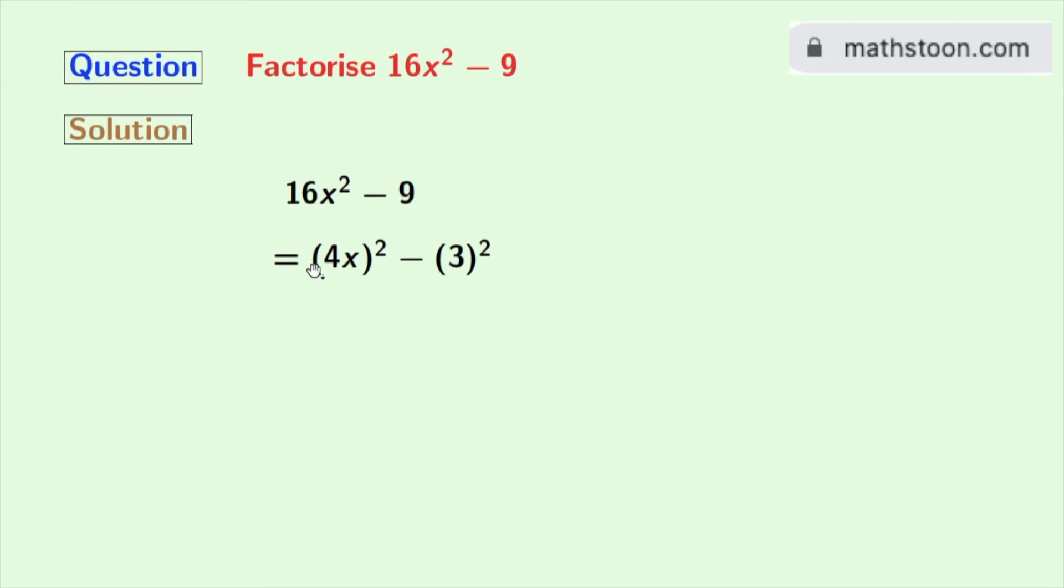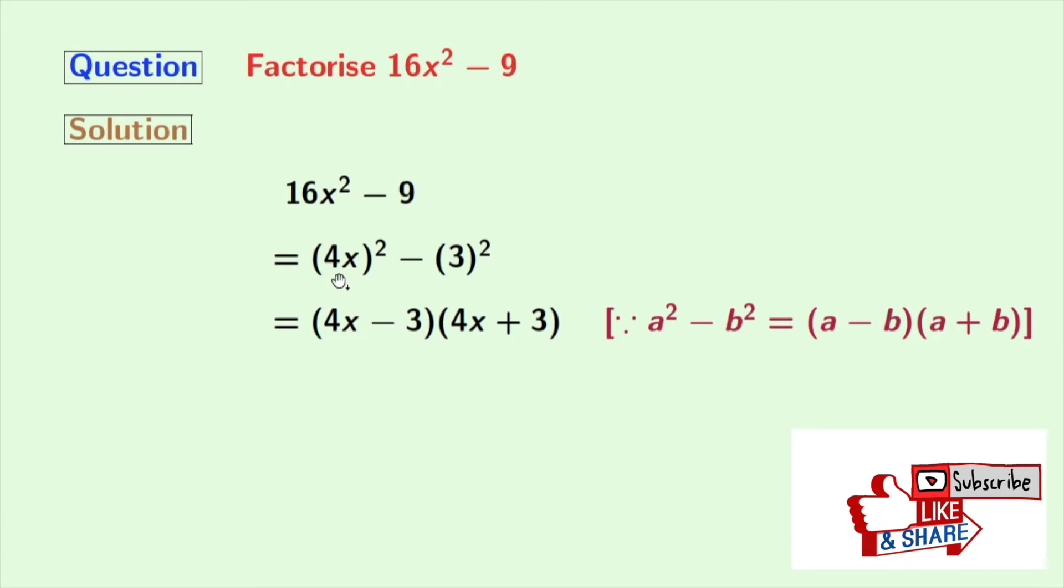Where a is 4x and b is 3, so we can easily apply the formula of a² - b² in this expression. So we will apply it and now we get (4x - 3) times (4x + 3).